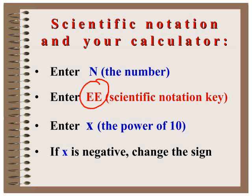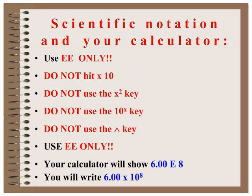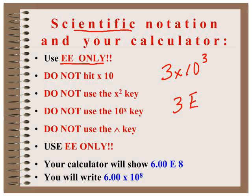First, find your scientific notation key on your calculator. It is the EE key, and every time you push it, it means a power of ten. Remember, you hit this key only when doing scientific notation. Don't hit times ten, even though we say 3 times 10 to the third. You're going to put in three, and then you're going to hit the E key, and then raise it to a power of three.